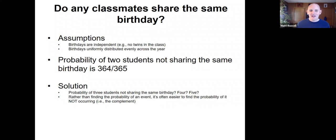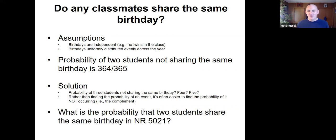And so this is one of the cool things about probability is that rather than finding the probability of some event occurring, it's sometimes easier and less work to find the probability of it not occurring, what we call in probability the complement of an event. And so what is the probability that two students share the same birthday in NR 5021?